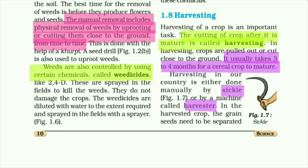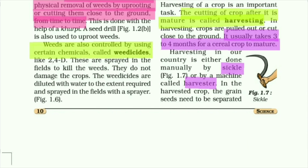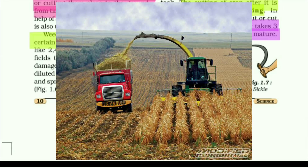In harvesting, crops are pulled out and cut close to the ground. This is done either manually by sickle or by a machine called a harvester. If you have not seen the harvester, please look — this is the harvester machine we use for cutting the crop.